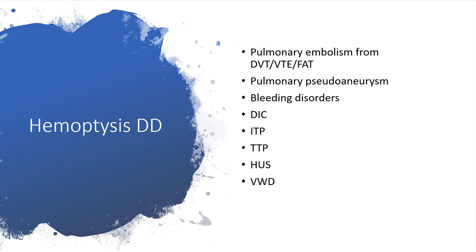Also not to be left out is pulmonary pseudoaneurysm and bleeding disorders — like disseminated intravascular coagulopathy, perhaps secondary to sepsis, pulmonary embolism, idiopathic thrombocytopenic purpura, thrombotic thrombocytopenic purpura, hemolytic uremic syndrome, or von Willebrand disease — which can all lead to hemoptysis.